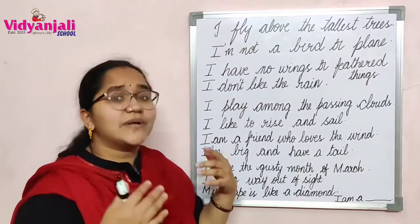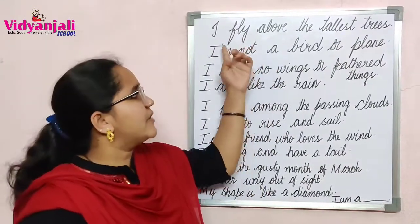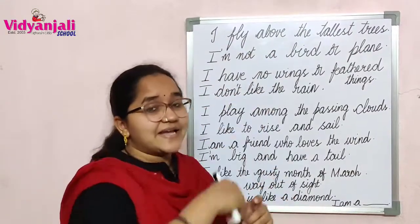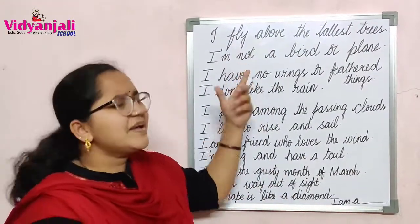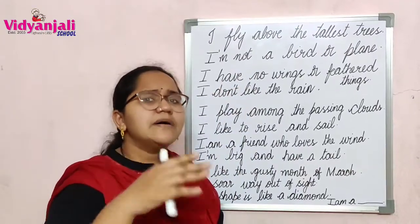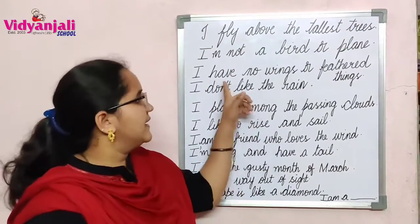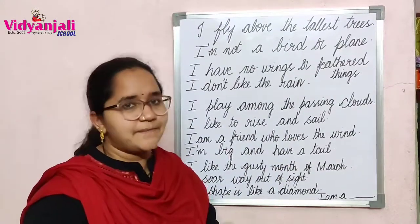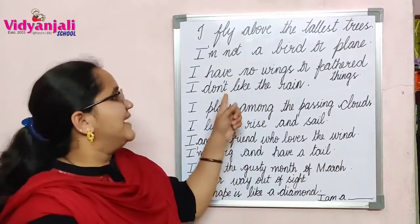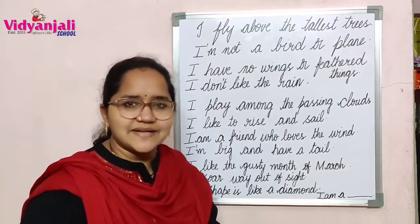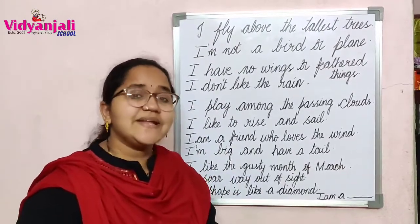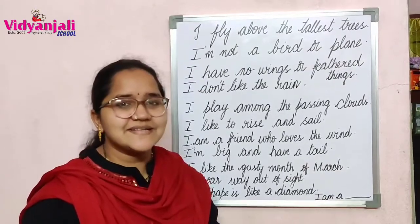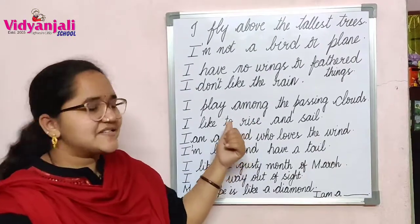One person or one thing is talking about this. It can fly — I fly above the tallest trees — but it's not a bird or a plane. It has no wings or feathered things, but it can fly. It doesn't like the rain. Why so? What's the reason? Let's see the second stanza.